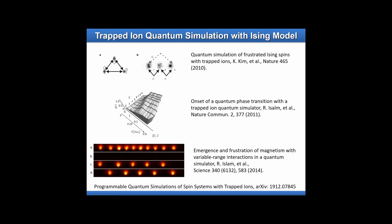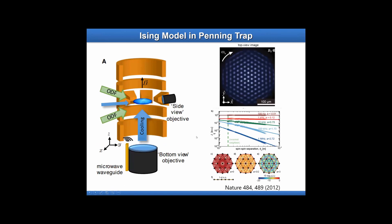A different type of ion trap uses about 100 to 200 ions in a two-dimensional crystal in a Penning trap, and groups have tried to do something similar. The problem is this trap is confined by magnetic field and keeps rotating at more than tens of kilohertz — very difficult to deal with individual controls. Spin-spin interaction itself could be generated, but no real ground state preparation was possible until now.